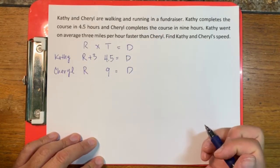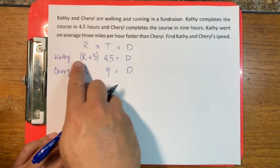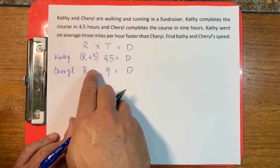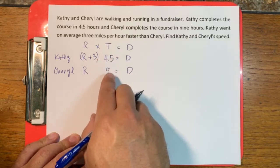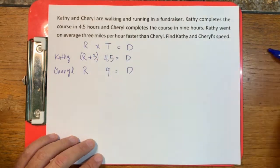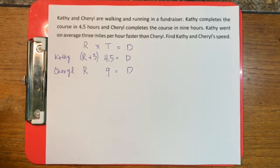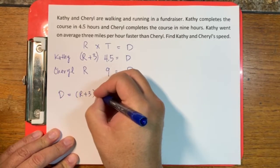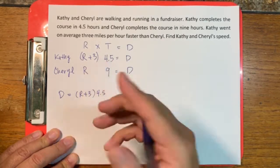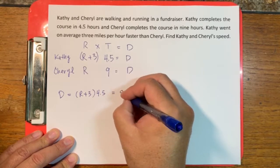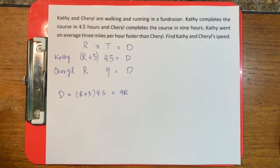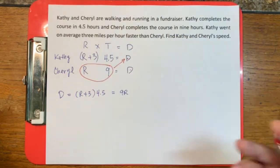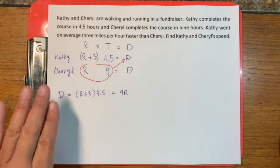Now we have two statements. We want to make sure we put parentheses around the rate before we multiply it with the 4.5. Both statements share a common variable d. So we say d equals (r + 3) times 4.5, and this same d is also equal to 9r. Since both d's are the same, we substitute one into the other. Either way we look at it, we get the same statement.